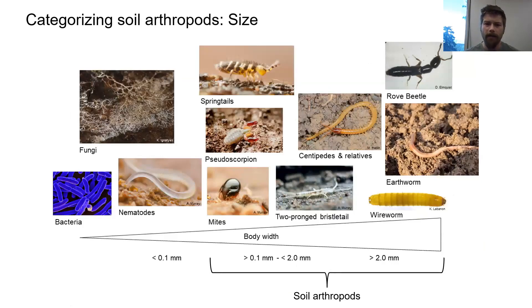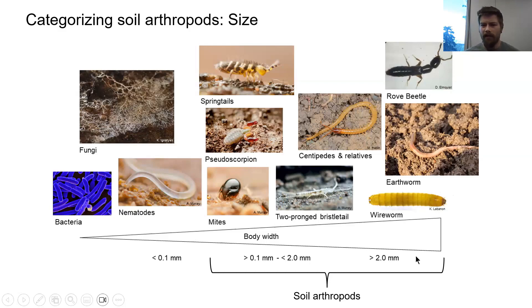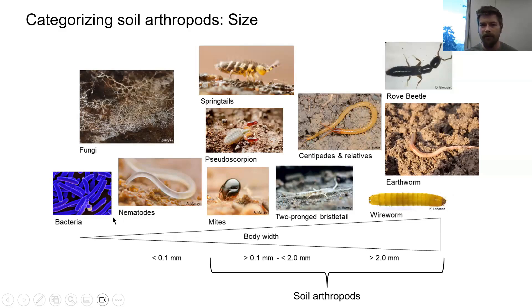Soil arthropods are categorized as mesofauna and macrofauna based on their body width. Mesofauna are animals with a body width greater than 0.1 millimeters but less than 2 millimeters — things like springtails, mites, two-pronged bristle tails, and pseudoscorpions. Macrofauna include animals with a body width greater than 2 millimeters, like beetles, wireworms, and earthworms — though earthworms are technically not arthropods. Below 0.1 millimeters are the microfauna: soil microbial communities, bacteria, fungi, and nematodes.